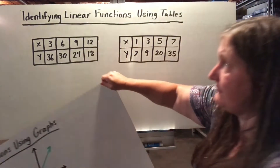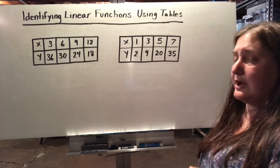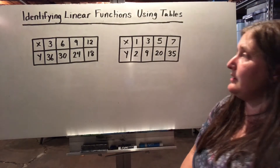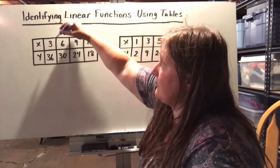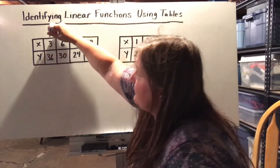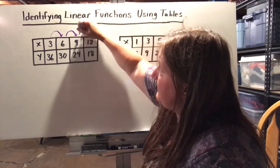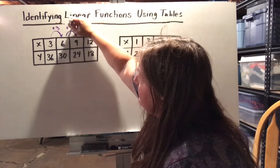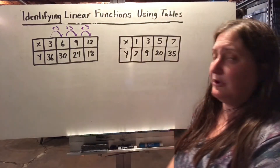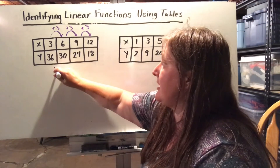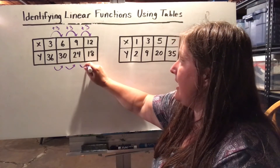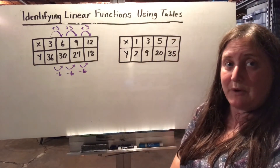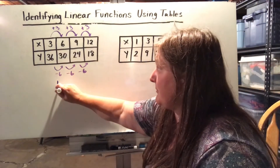I can also identify linear functions by looking at different tables. Here we have input-output tables where inputs are x values and outputs are y values. I notice my inputs go from 3 to 6 to 9 to 12 — increasing by 3 each time, so a constant rate of change. My output values are decreasing by 6 each time — also a constant rate of change. So this represents a linear function.